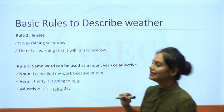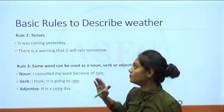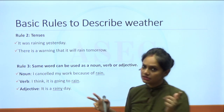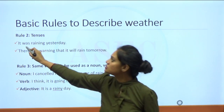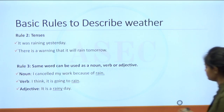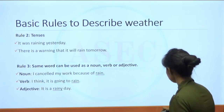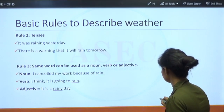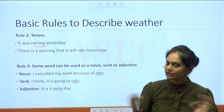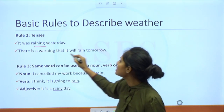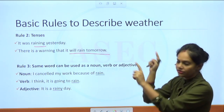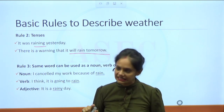Rule number two: tenses. Just like that, you can use weather in any tense. The format remains the same — just the tenses change. For example, 'It was raining yesterday' changes 'is' to 'was.' 'There is a warning that it will rain tomorrow' — the format remains the same, just the tense has changed.